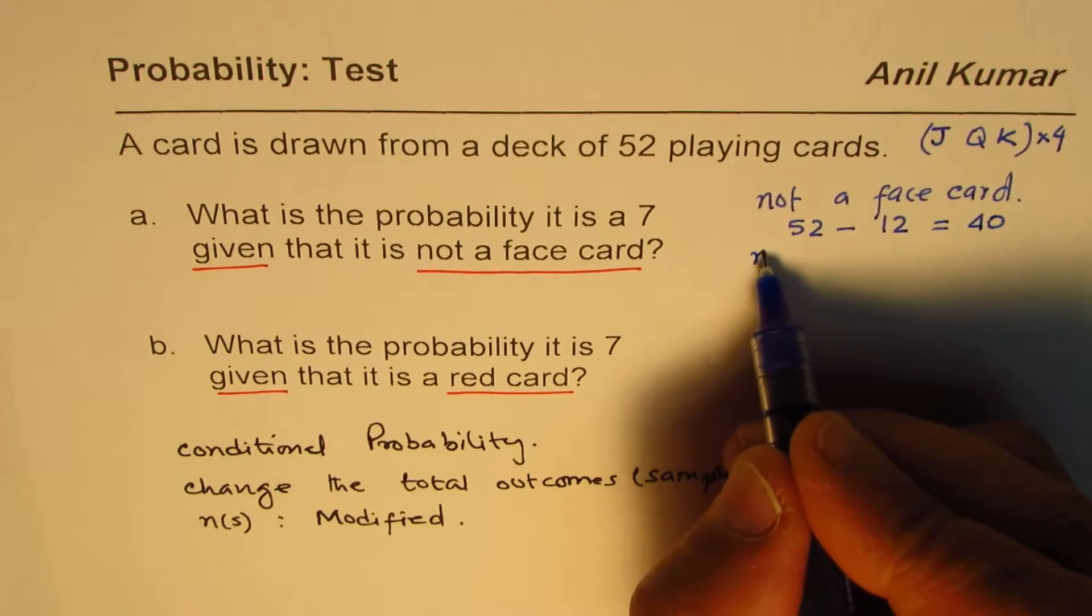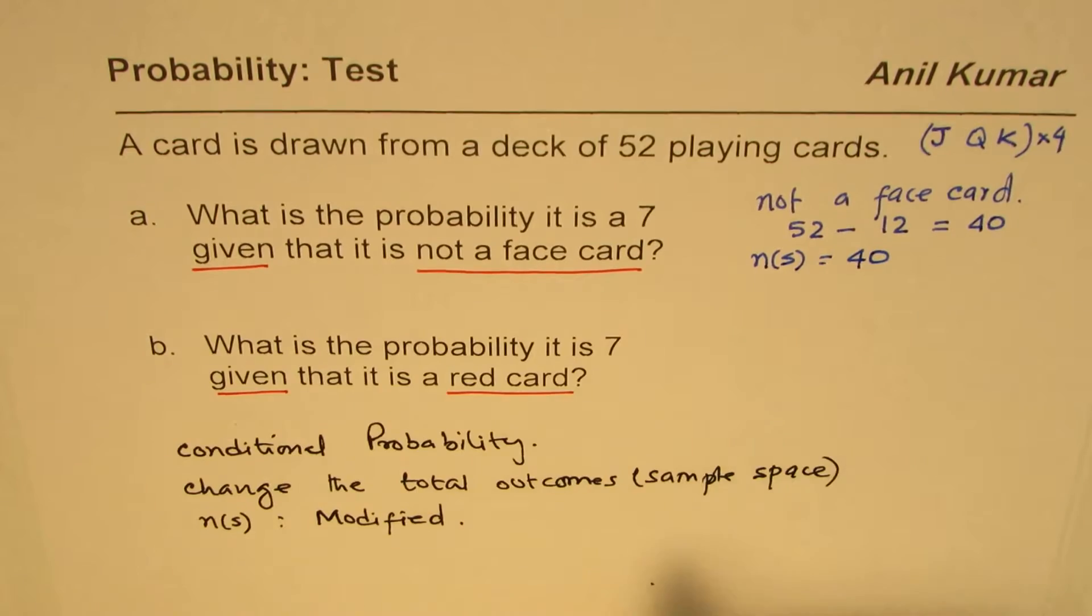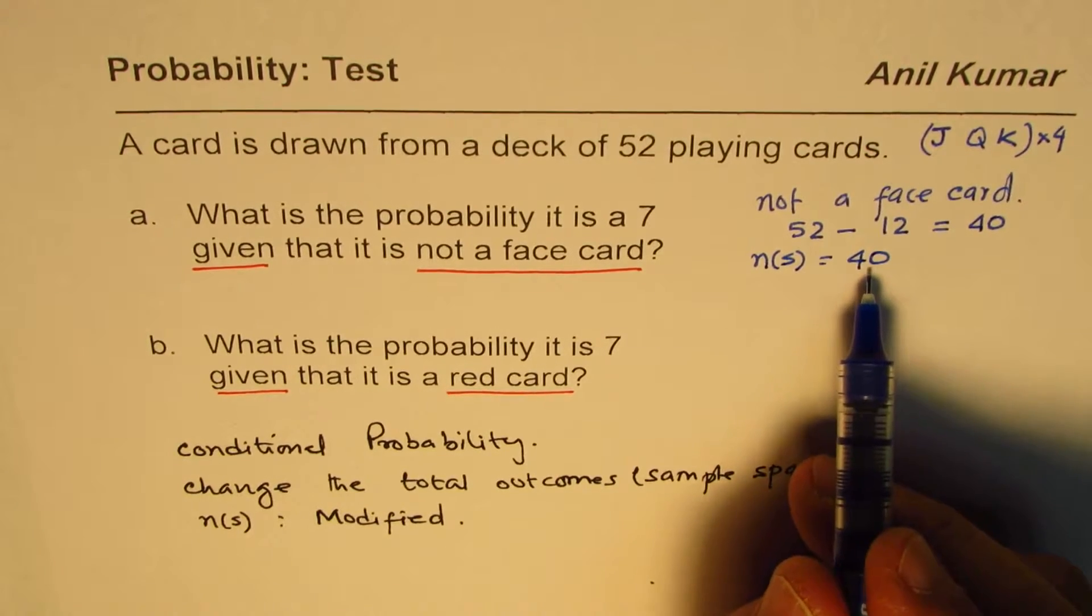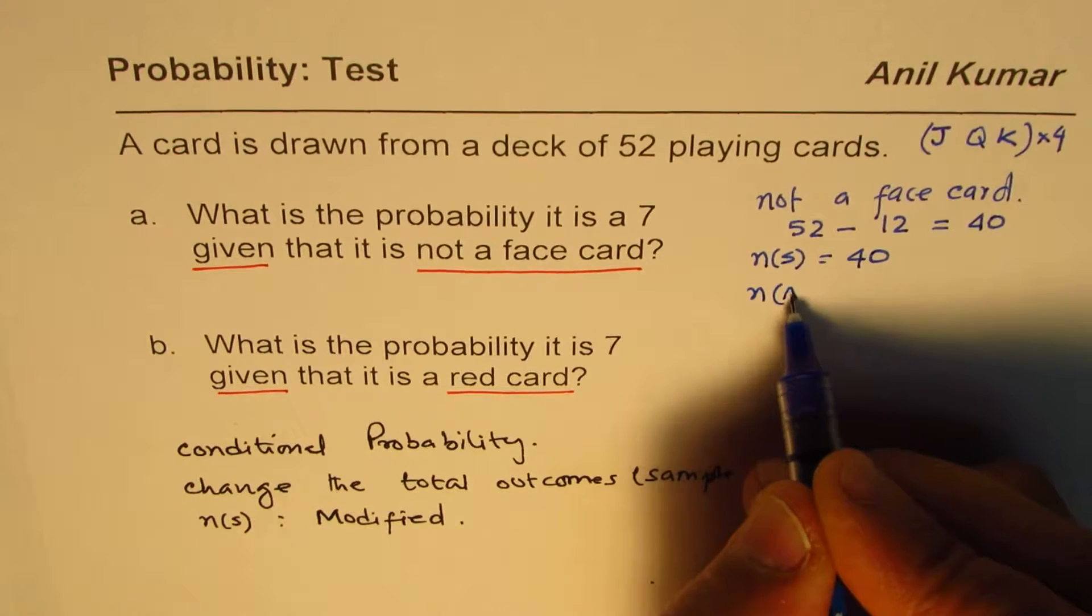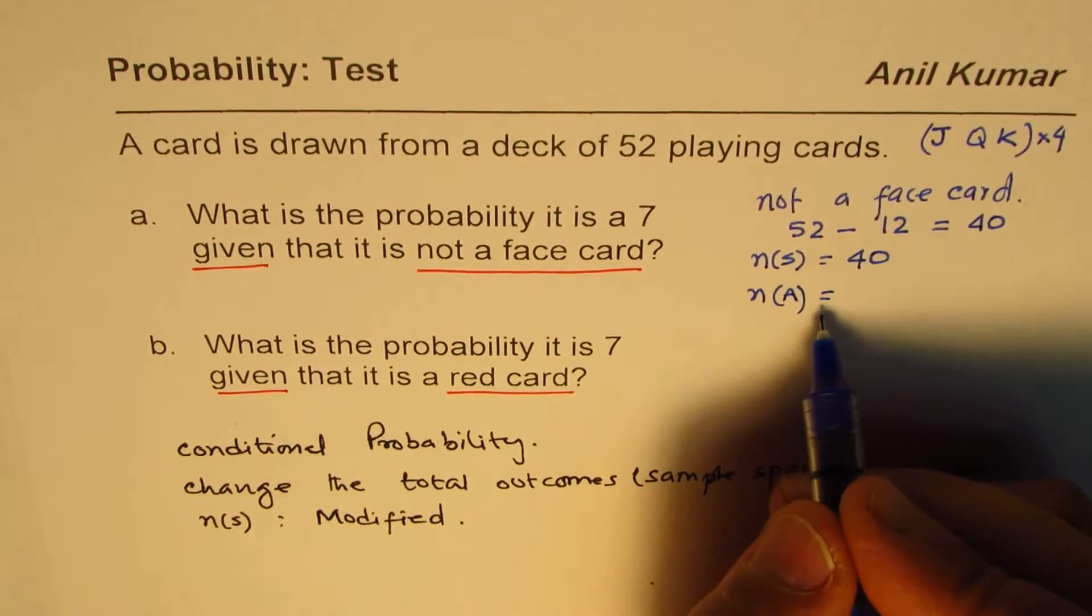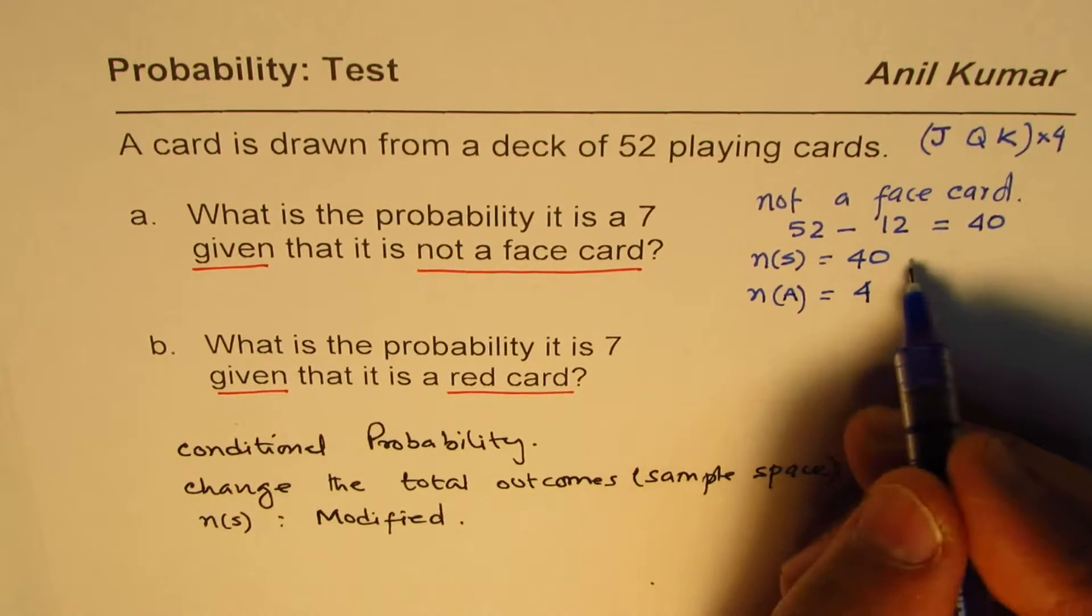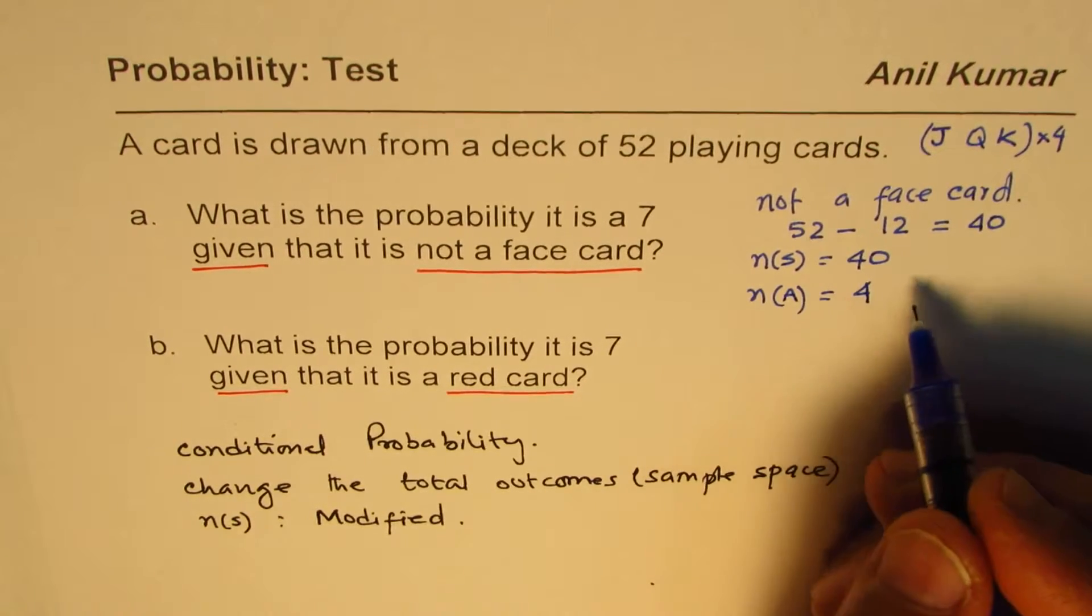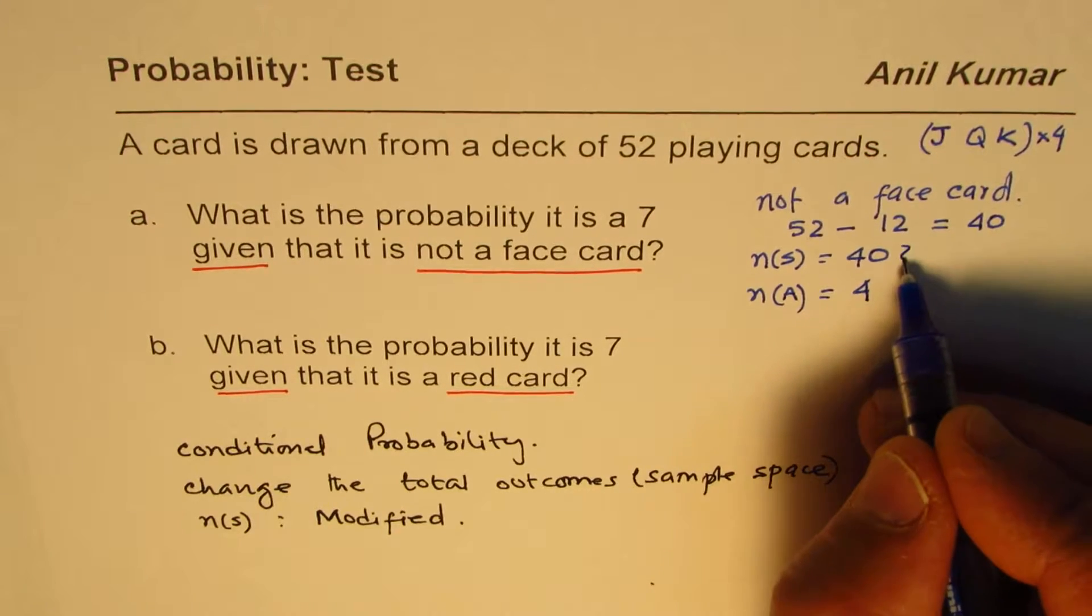So you are working with a domain of 40 cards. In our sample space we have 40 cards only. Out of these 40 cards, how many are sevens? The number of sevens, let's say that is event A, is 4, one of each kind. Therefore the probability here will be ratio of 4 and 40.